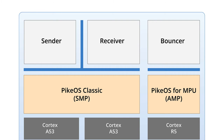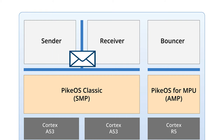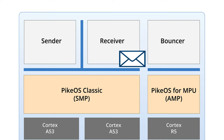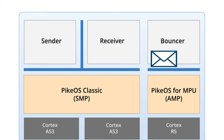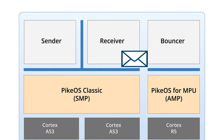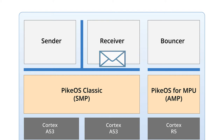This example shows how inter-core communication basically works. The sender on the A53 distributes packages to the bouncer on the R5, which sends back the data to the receiver, also running on the A53.